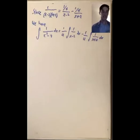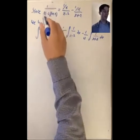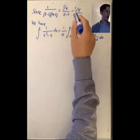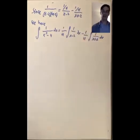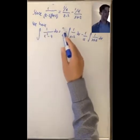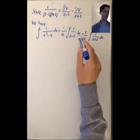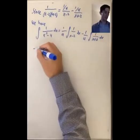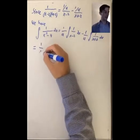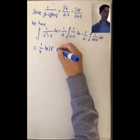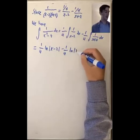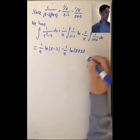Our goal was to compute the integral of 1 over x squared minus 4 dx. We have figured out that 1 over x squared minus 4 can be written as 1/4 divided by x minus 2 minus 1/4 divided by x plus 2. So the integral we want equals 1/4 times the integral of 1 over x minus 2 dx, minus 1/4 times the integral of 1 over x plus 2 dx. This is 1/4 times natural log of the absolute value of x minus 2.